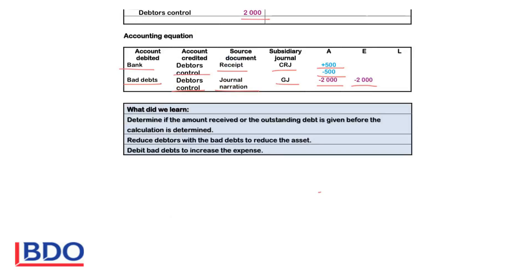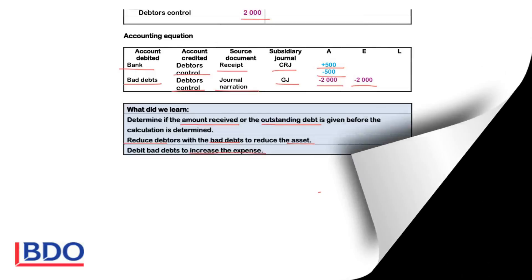What did we learn? Determine if the amount received or the outstanding debt is given before the calculation is done. If the amount received is given, then it means that you don't know what is the outstanding debt. If the outstanding debt is provided, you have to calculate what is the amount received. The calculation is done differently to determine the bad debts, so it's very important to determine whether the amount received or the outstanding debt is provided. Reduce debtors with the bad debts and the amount received so that the assets can decrease. Bad debts is an expense and will increase the expenses, therefore bad debts is debited.